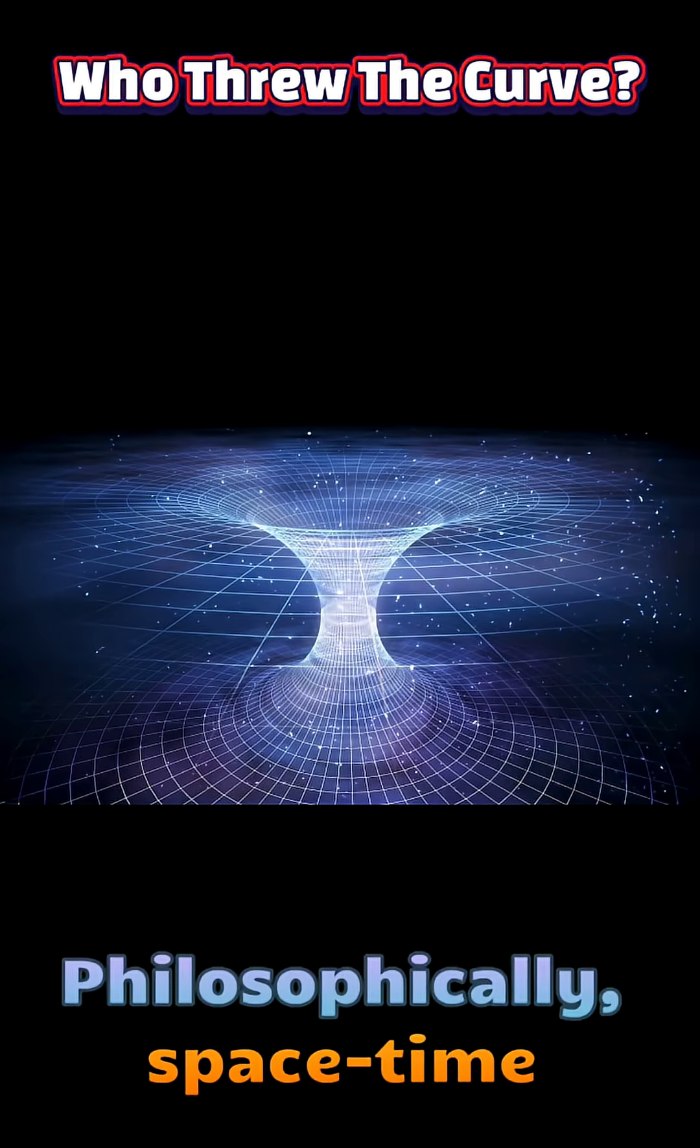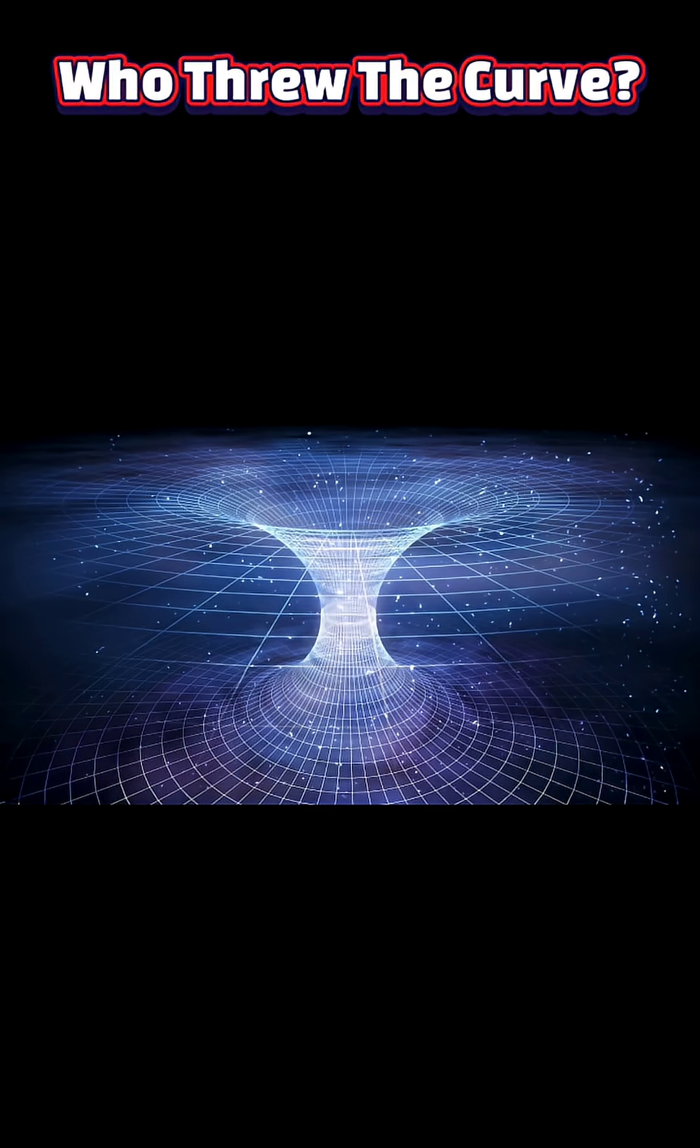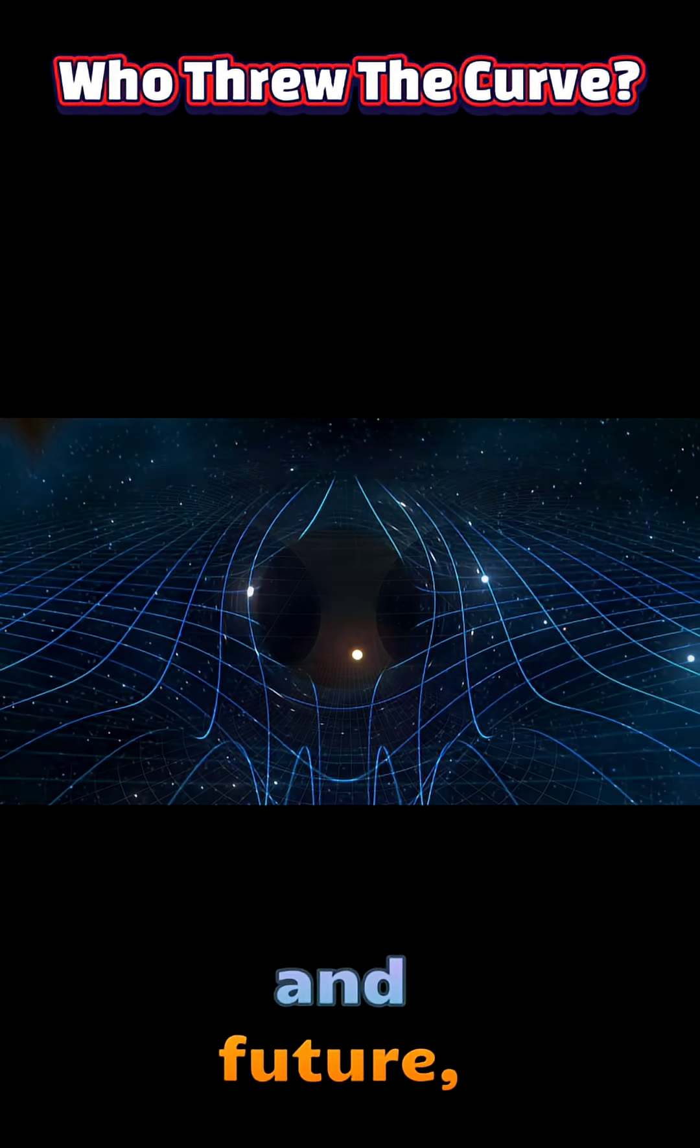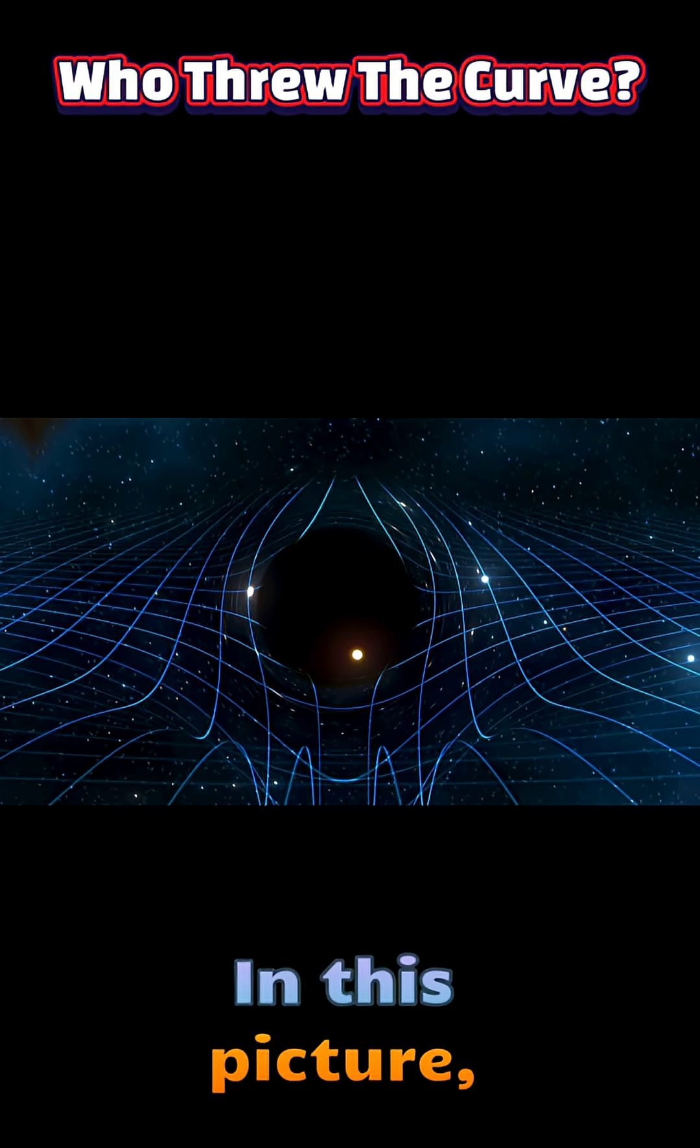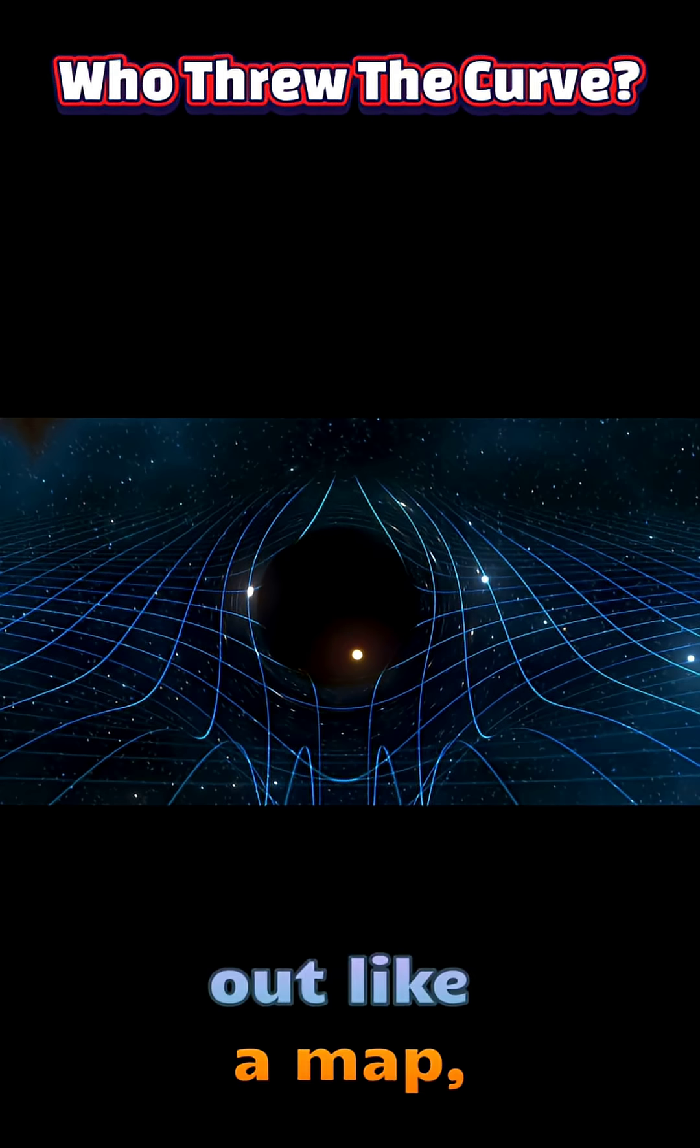Philosophically, space-time raises deep questions about the nature of reality. Some interpretations, like the block universe view, suggest that all moments—past, present, and future—exist equally within the four-dimensional structure. In this picture, time does not flow. Instead, the entire history of the universe is laid out like a map, and our perception of moving through time is an illusion.